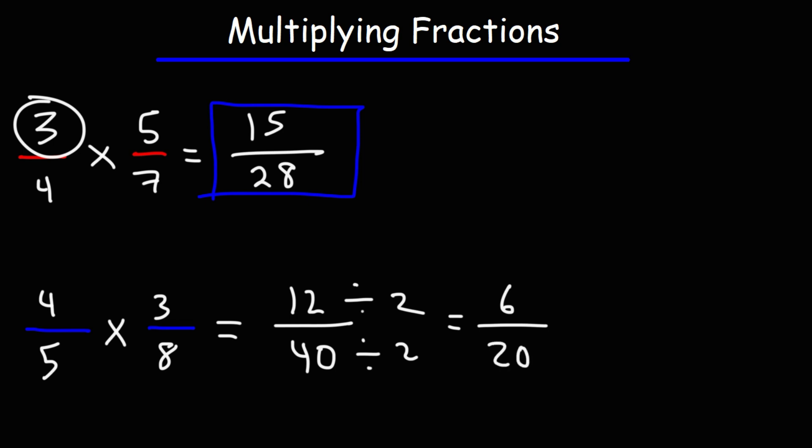Now we can also reduce this fraction further. So we can divide both numbers by 2 again. 6 divided by 2 is 3. 20 divided by 2 is 10. So the final answer is 3 over 10.